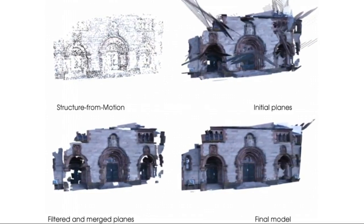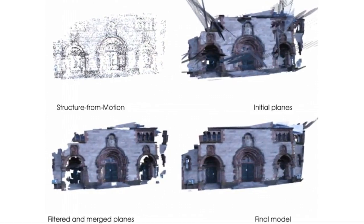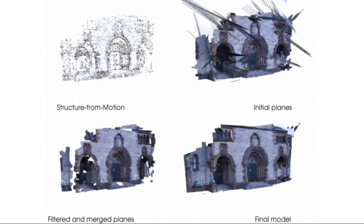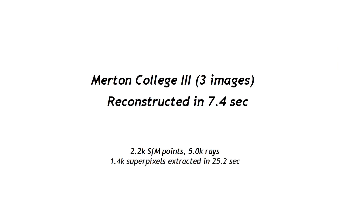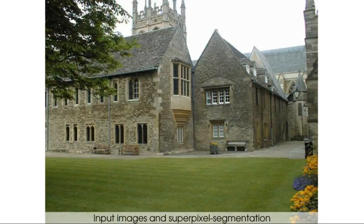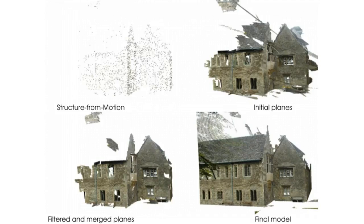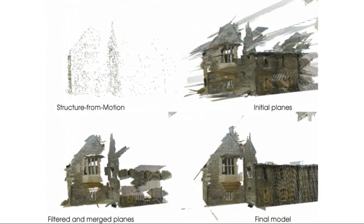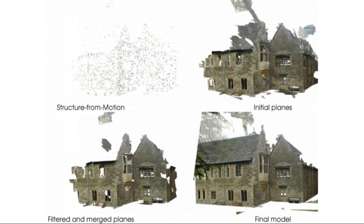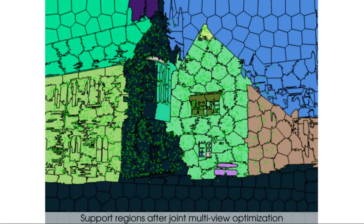Motivated by the success of slanted plane stereo algorithms, our method leverages image segments to guide local plane fitting to the sparse point cloud. To find image areas belonging to the same planes, we propose a novel multi-view optimization driven by image features, 3D points, and visibility rays. This is solved jointly over all superpixels in our views, avoiding expensive photoconsistency computations and taking seconds to minutes on the presented scenes.